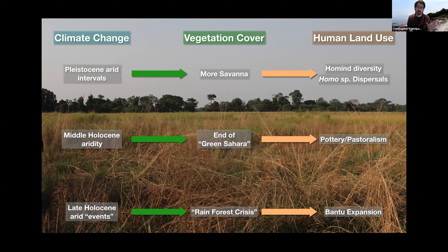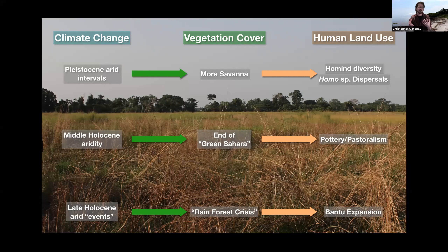We attribute pottery and pastoralism to the end of that green Sahara phase — things weren't as good, so people invested in niche technologies. Then in the late Holocene, the last three thousand years, some scholars describe a 'rainforest crisis': an arid event that supposedly shrank the rainforest to roughly the same area as during the Last Glacial Maximum, about 20,000 years ago. That gets linked directly to the Bantu expansion — the movement and dispersal of people out of central-west Africa across all of sub-Saharan Africa.